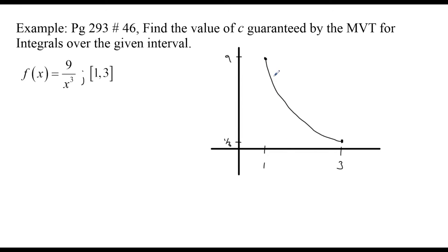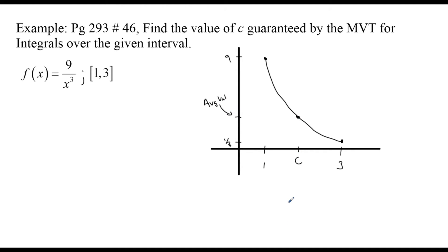We know from pre-calculus that this type of function grows very rapidly — it curves down and gets closer and closer to zero. Because this is not a linear curve, there are very few high values but a lot of low values. So the average value isn't going to be directly in the middle. The mean value theorem for integrals says there has to be some c such that when I plug in that c, I get the average value for the function over that interval. Let's find the average value first.